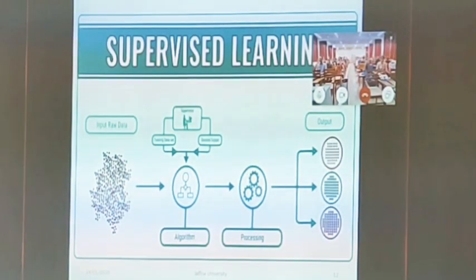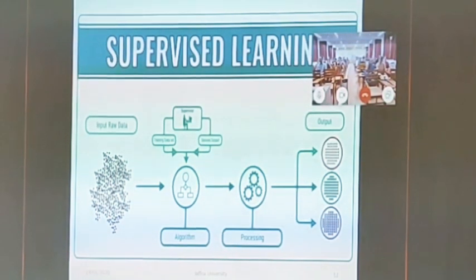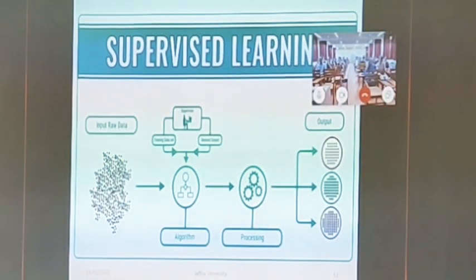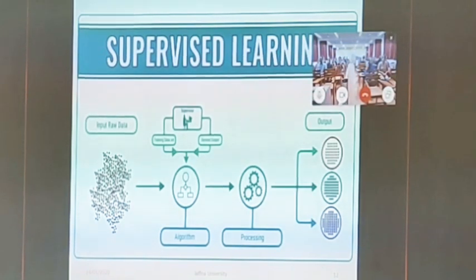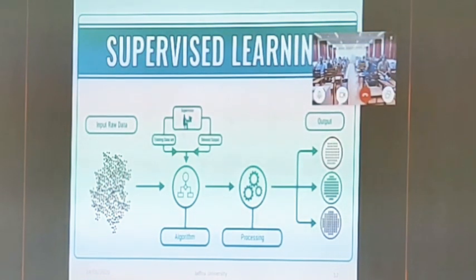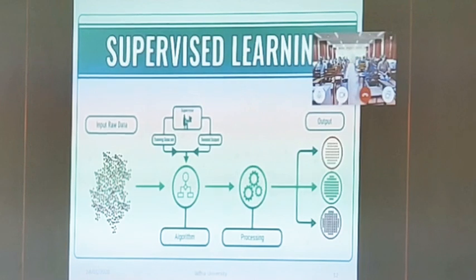In supervised learning, the supervisor provides input data and the algorithm is processed with known outputs to get results. The costs are reduced compared to other algorithms because there are techniques supervised in order to get good results. Someone is always watching in order to get the correct results — that is the major task of the supervisor.